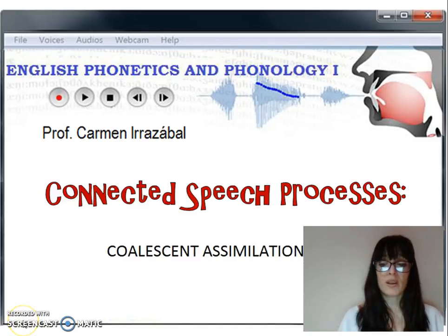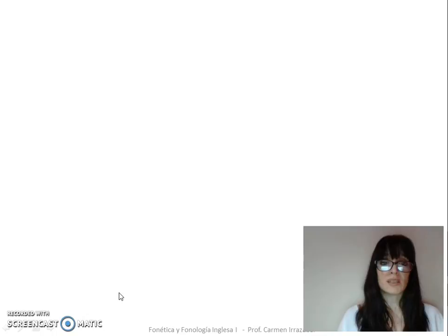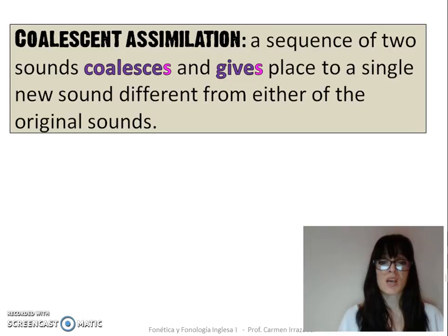Coalescent Assimilation. In this type of connected speech process, a sequence of two sounds coalesces and gives place to a single new sound, different from either of the original sounds.